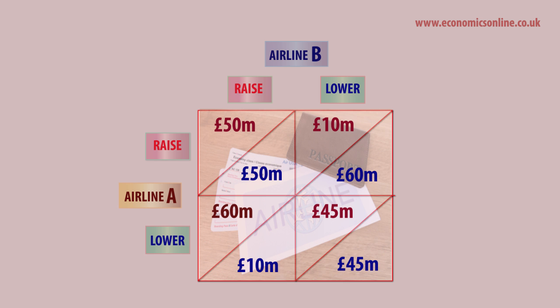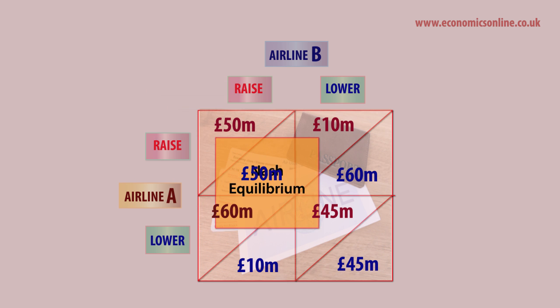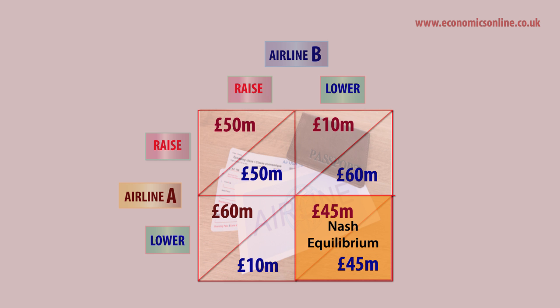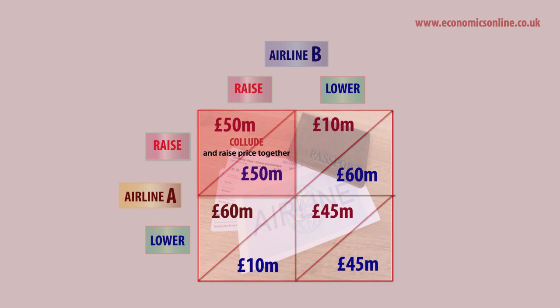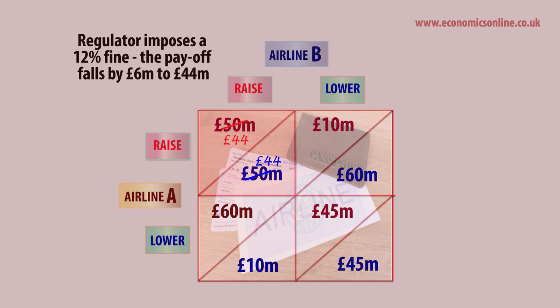However, if they collude and promise not to cheat, they can both increase price together and maximize their joint profits at £100 million. A regulator can enter the market to impose a fine on firms caught colluding. A 12% fine would be sufficient to provide a disincentive to collusion — taking into account the fine, the net gain from colluding at £44 million would be less than from openly competing on price. Hence regulators can exploit game theory to alter the behavior of firms and deter anti-competitive behavior.